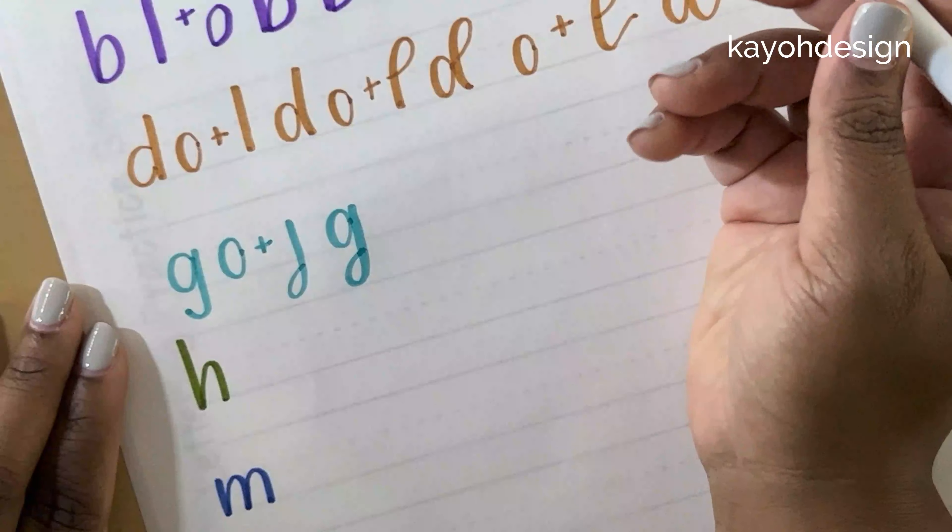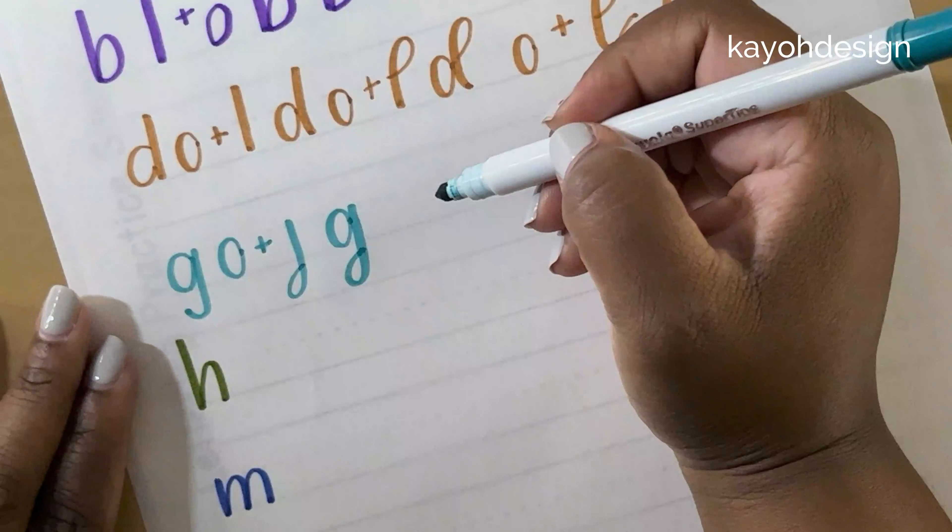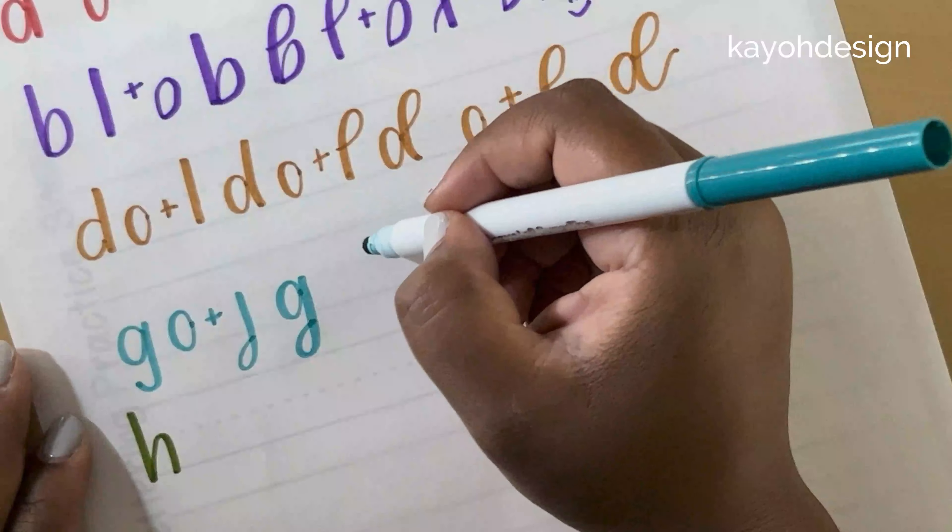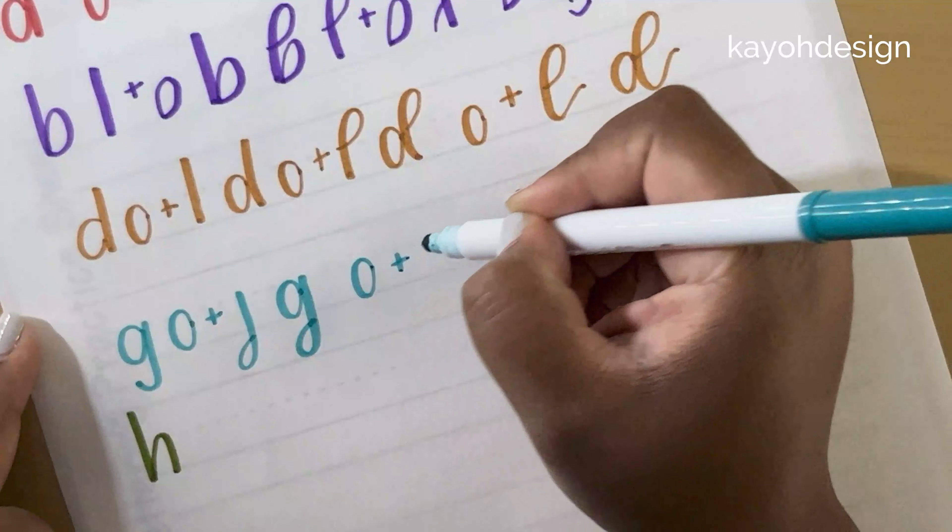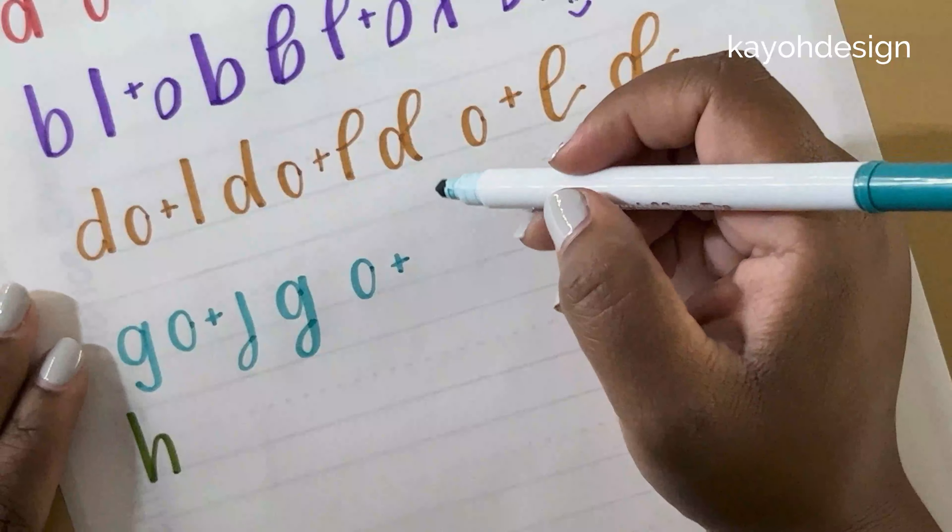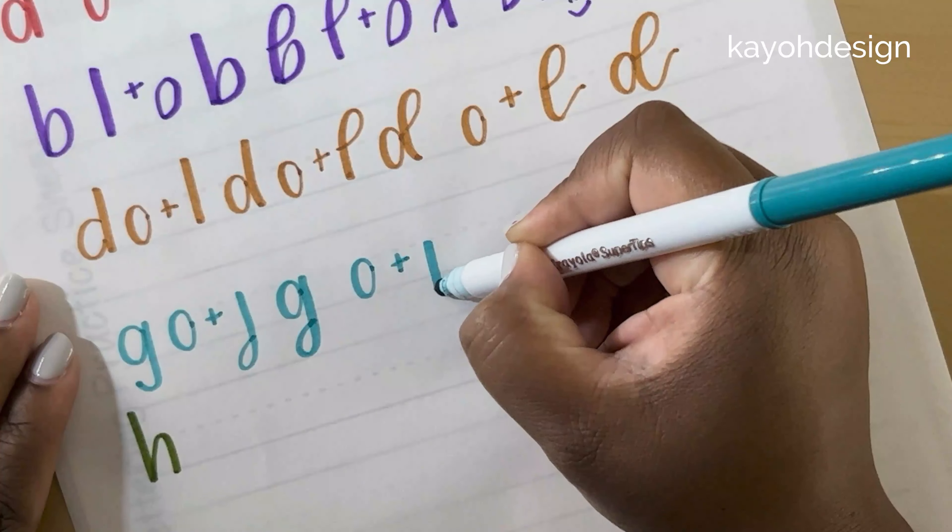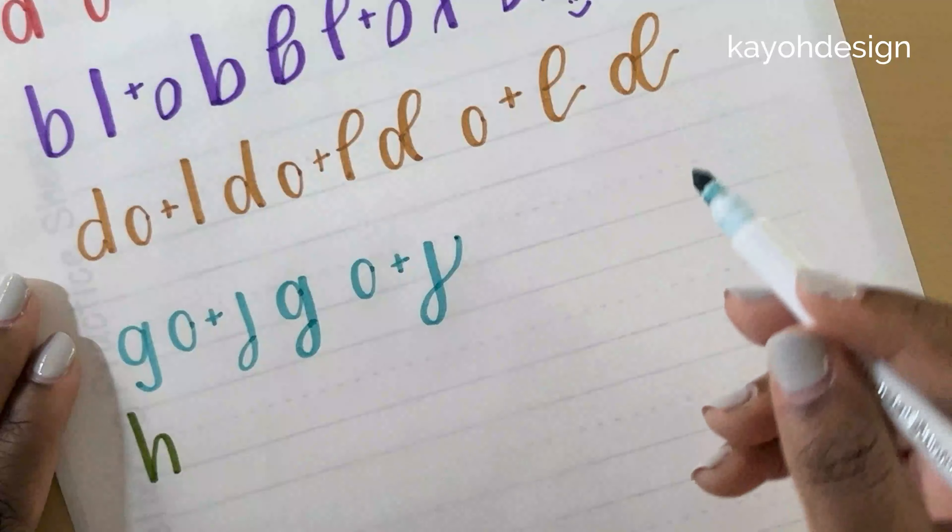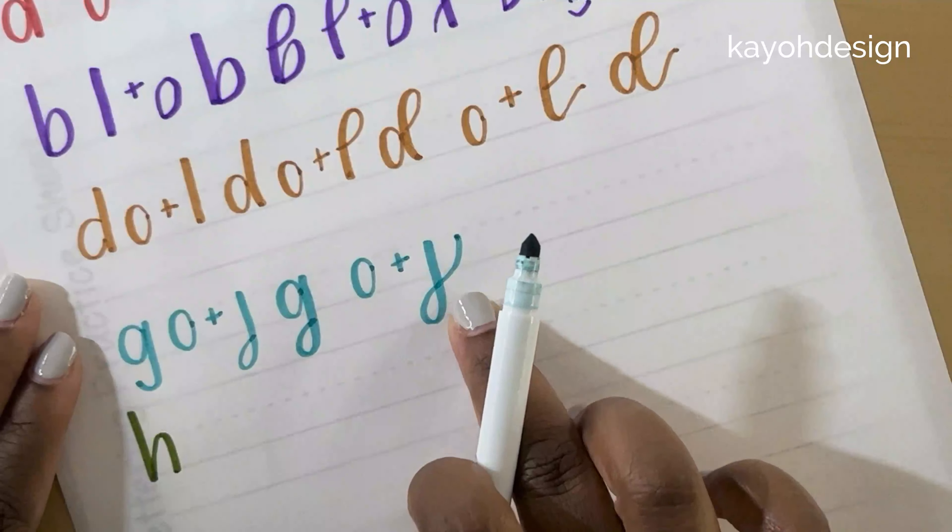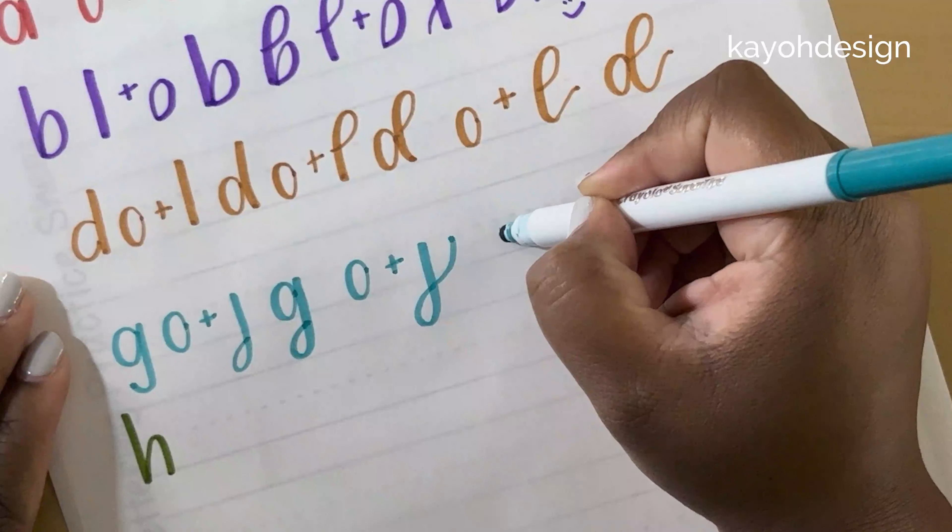So I'll do one more G. But again, it consists of the oval plus that same J loop. But this time I'm going to bring it up higher on the exit, which gives...